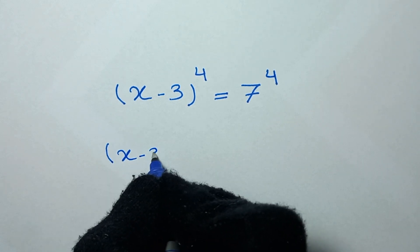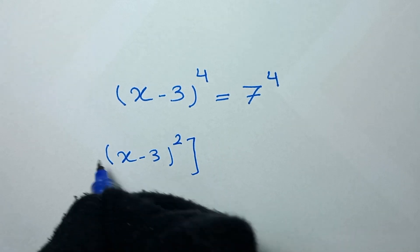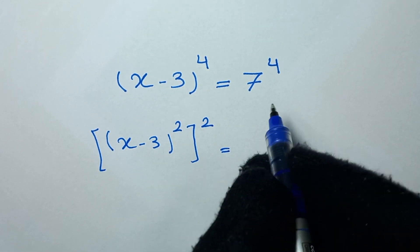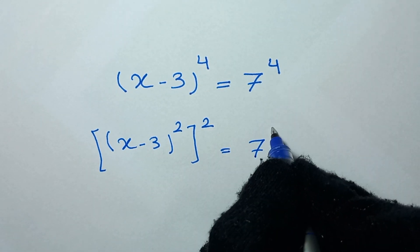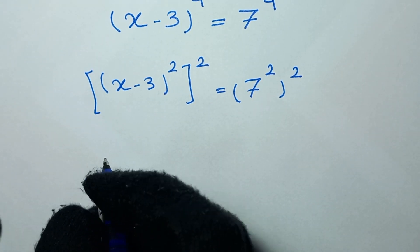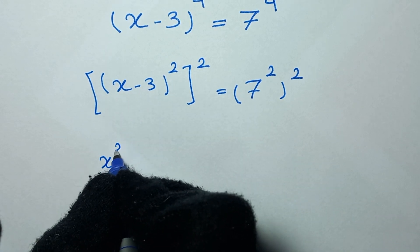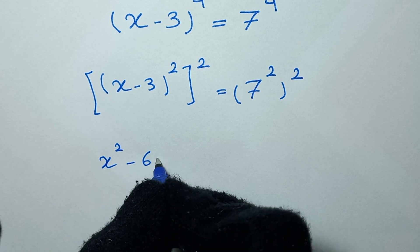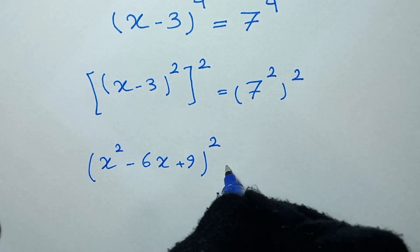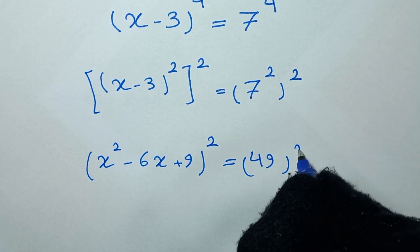We take (x minus 3) to the power of 4 and write it as (x minus 3) to the power of 2, and to the power of 2. On the right side, 7 to the power of 4 becomes 7 to the power of 2, and to the power of 2. Then (x minus 3) squared expands to x squared minus 6x plus 9, all squared, and 7 squared is 49, all squared.